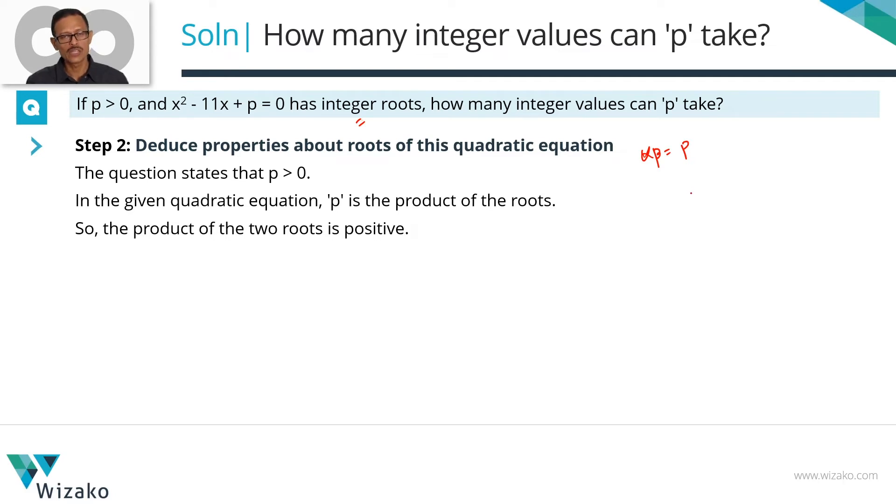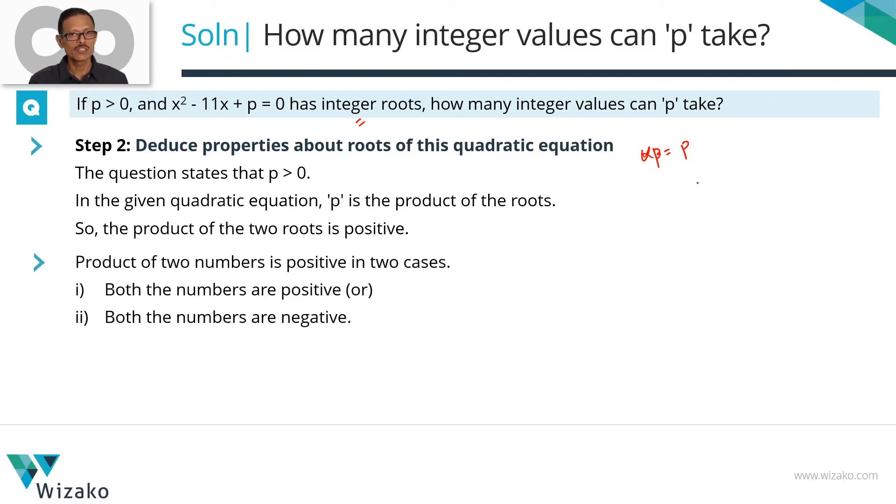Next question is: when will the product of two numbers be positive? The product of two numbers will be positive in two instances: either when both the numbers are positive, alpha is positive, beta is also positive, or when both the numbers are negative.